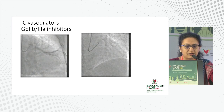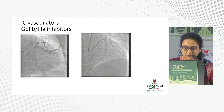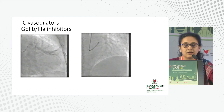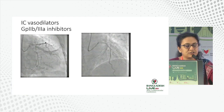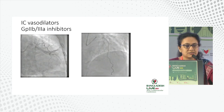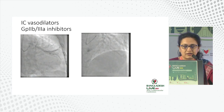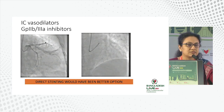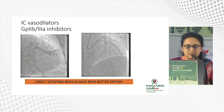We gave IV intracoronary vasodilators, GP2B3A inhibitors, and did stenting with no post-dilatation. This was the flow we achieved — still TIMI-2, but the patient was asymptomatic after this. So direct stenting would have been a better option had imaging been used in this case.